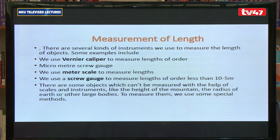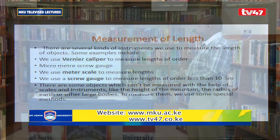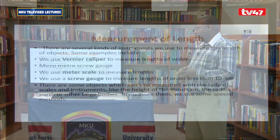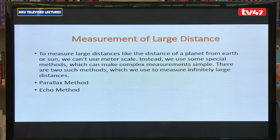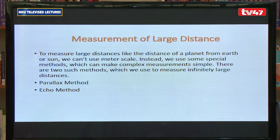There are some objects which cannot be measured with scales and instruments, like the height of a mountain, the radius of the Earth, or other large bodies. To measure them, we use special methods. These include two special methods: the parallax method and the echo method.